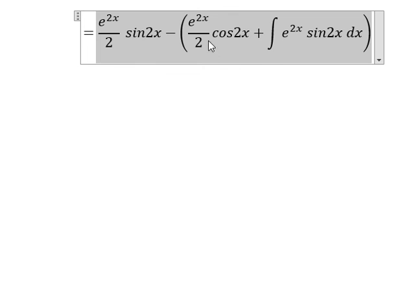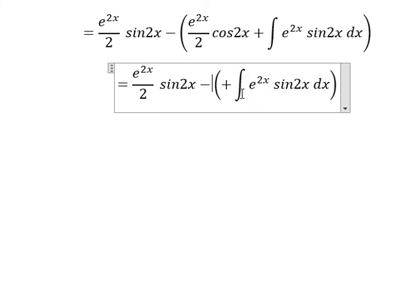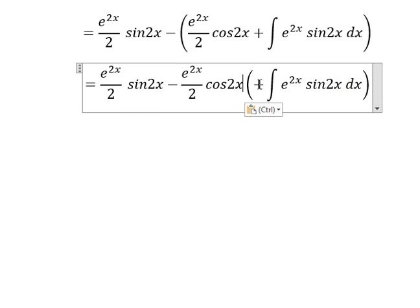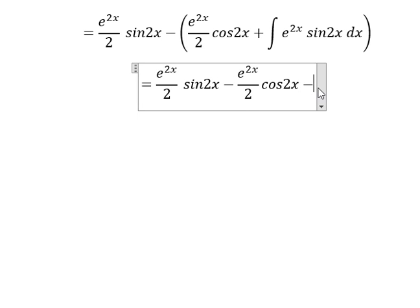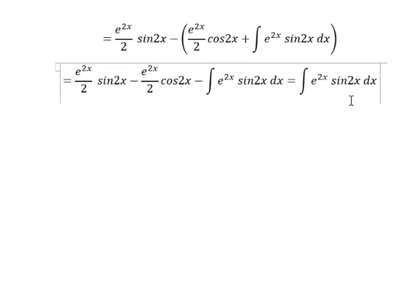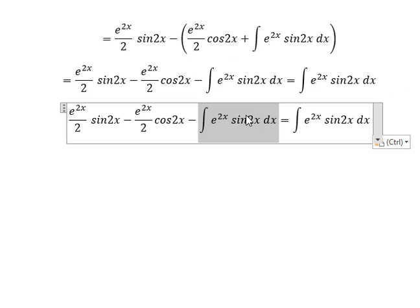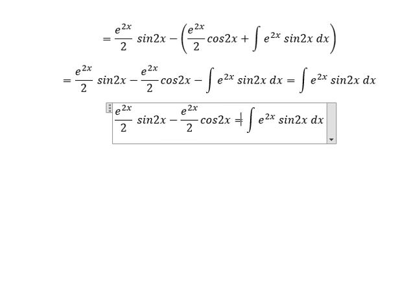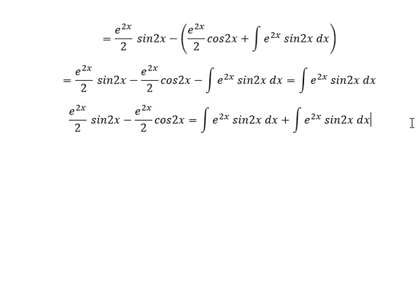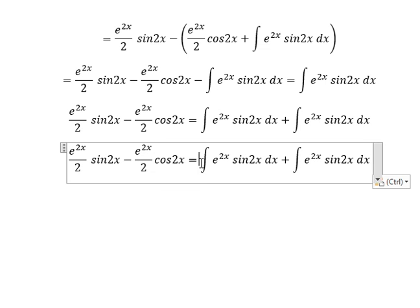Now we need to open parentheses and change the sign of this one, you get negative. Negative with positive gives negative. We know that everything here equals this one. Now I will move this one to the right, and you get positive. This one plus this one gives 2.